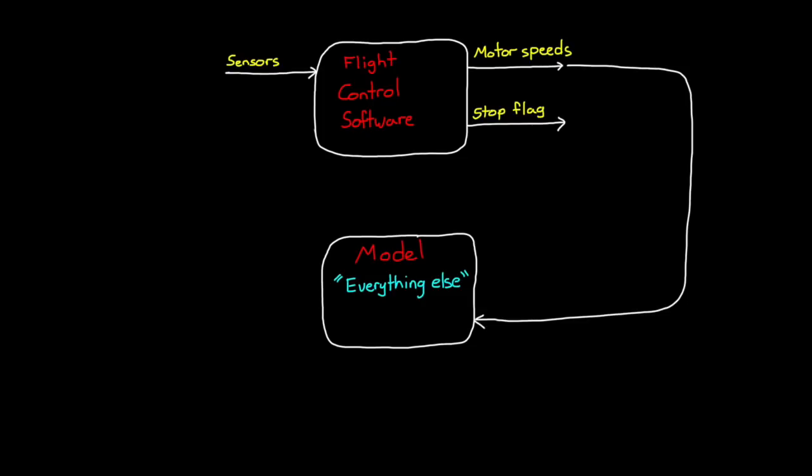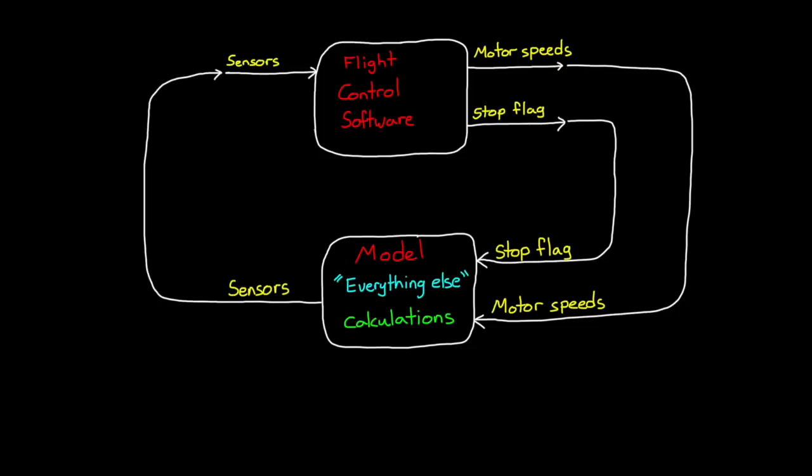At a very basic level though, the model inputs motor commands and the stop flag, makes a few calculations, and then outputs sensor measurements. In this way, the model is wrapping around the flight code and provides the feedback loop.